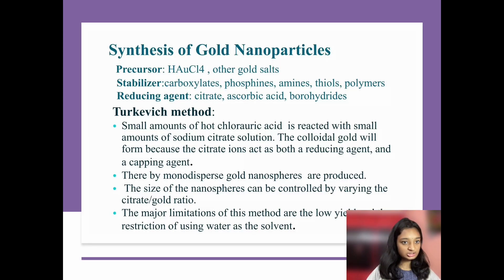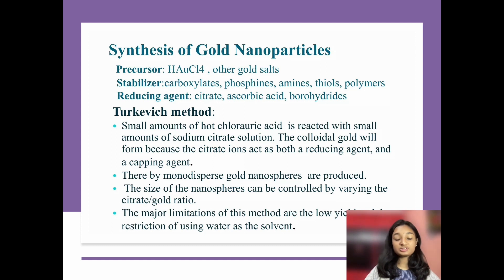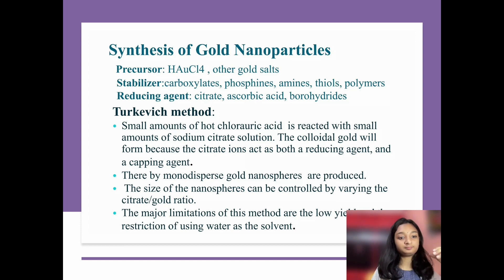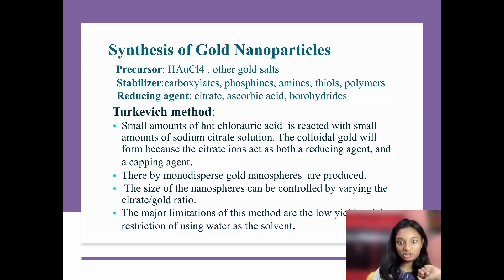We'll look at the precursor, stabilizer, and reducing agent. The precursor is HAuCl4 (chloroauric acid) and other gold salts. The stabilizer includes carboxylates, phosphines, amines, thiols, and polymers. The reducing agent includes citrate, ascorbic acid, and borohydrides. The first method is the Turkevich method: small amounts of hot chloroauric acid are reacted with small amounts of sodium citrate solution. Citrate acts as both reducing agent and capping agent, forming colloidal gold. Monodispersed gold nanospheres are produced, and their size is controlled by varying the citrate-to-gold ratio. Two major limitations of this method are low yield and restriction to using water as solvent.